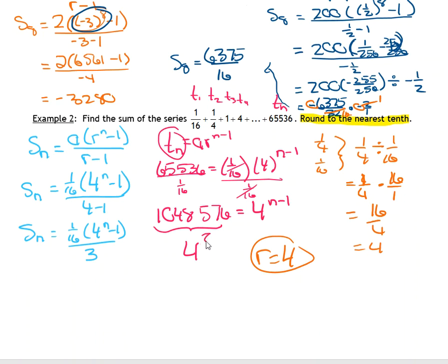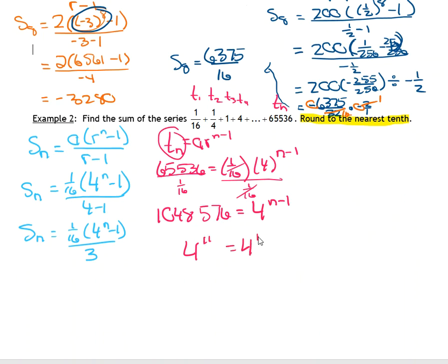Now what we have to do is make our bases match. I need to write this number with a base of 4. So this is 4 to the power of what? So you're going to have to do some trial and error on your calculator. 4 to the power of 5, 4 to the power of 6. Keep going. Press pause until you come up with a number there. So you got 4 to the power of 10 equals 4 to the power of N minus 1. Now that our bases match, we can ignore them because N minus 1 must equal 10. So 10 equals N minus 1. Add 1 to both sides. And 11 is N.